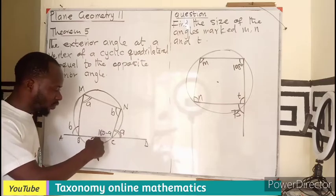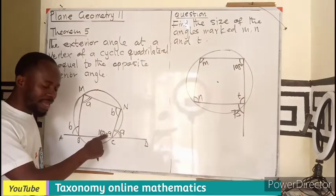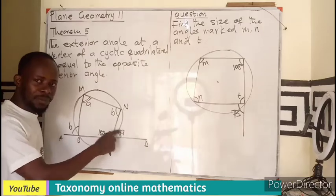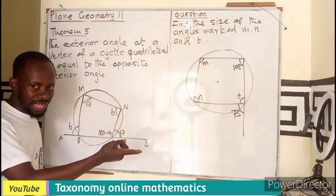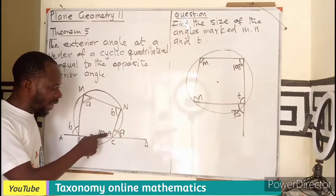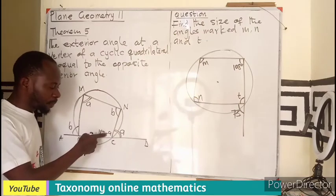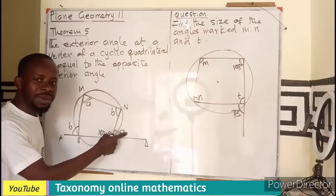Therefore, if I add this 180 minus A plus A, I should be getting 180. That simply means that the answer I will subtract from this that will give me this, will be the opposite angle to give me this.